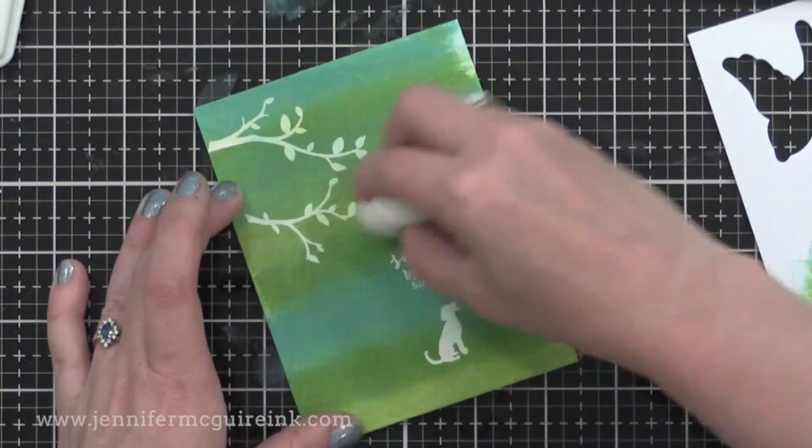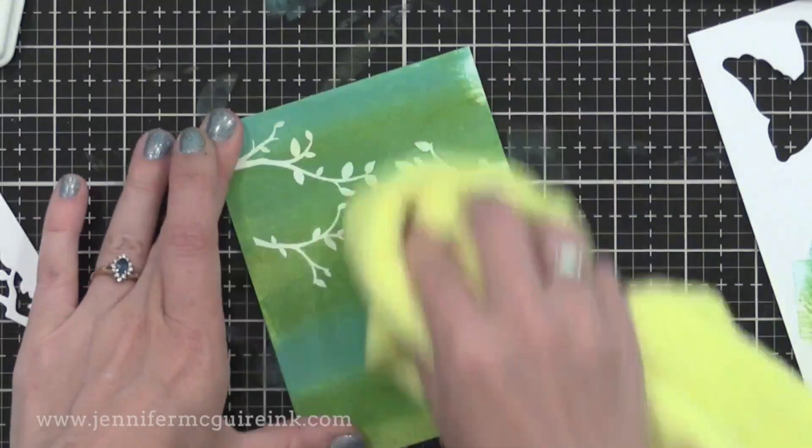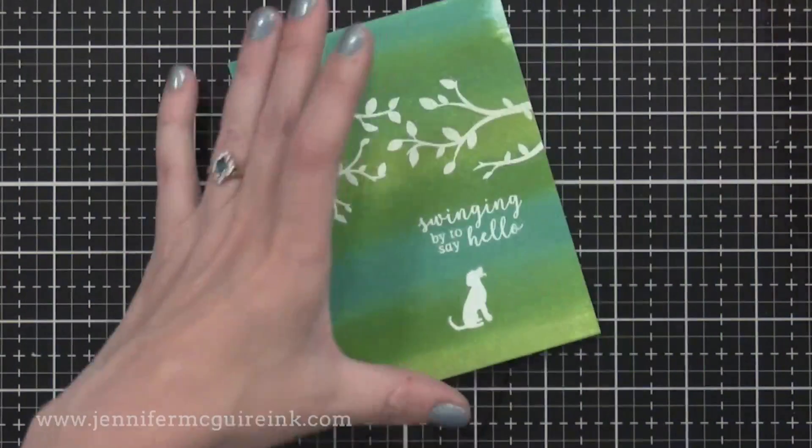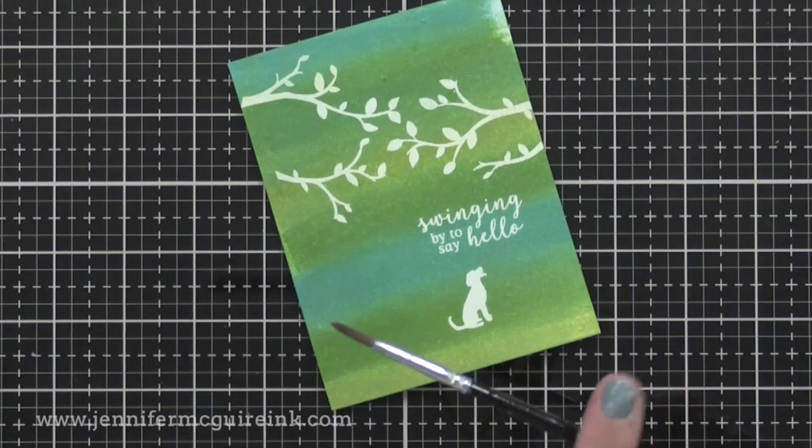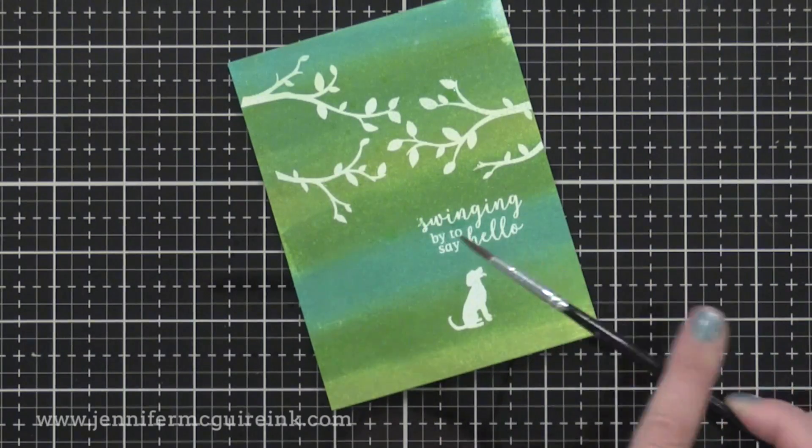Here I'm using an inking tool to just kind of blend the colors together more. And again, buffing off the excess ink. You can see that white embossing resists the ink that we put on top.